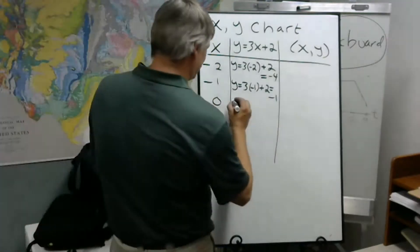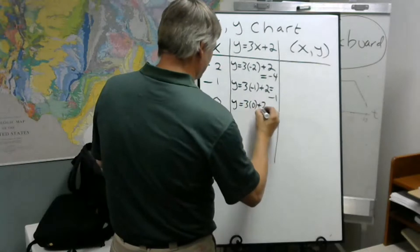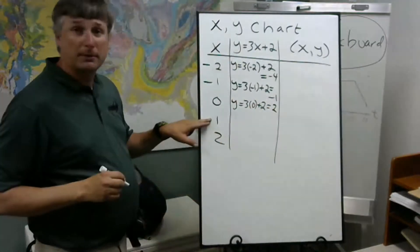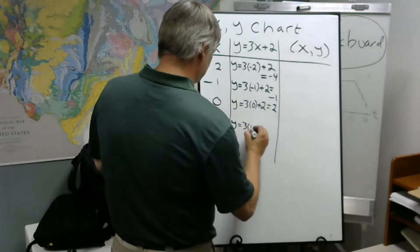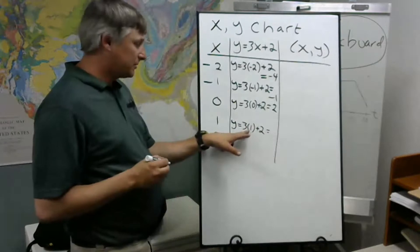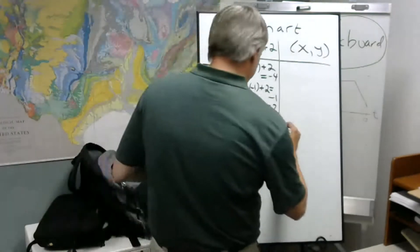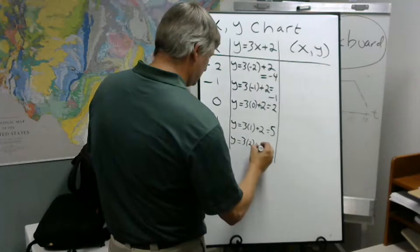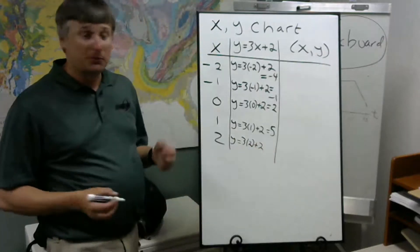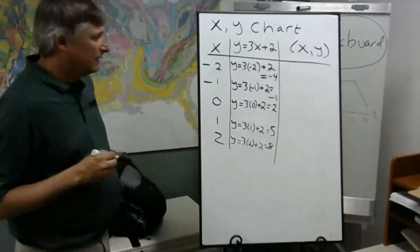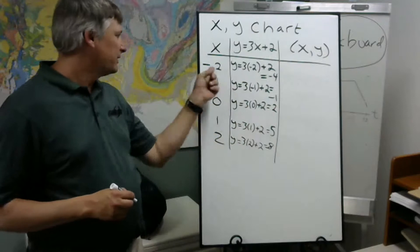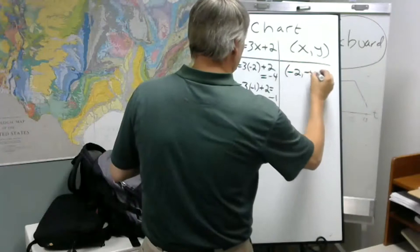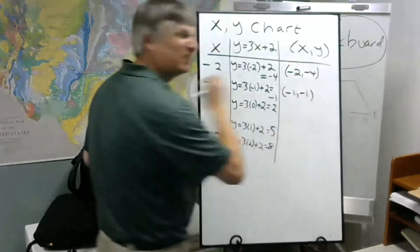Let's try zero. So 3 times 0 is 0, 0 plus 2 is 2. And then 1: 3 times 1 is 3, plus 2 is 5. And finally, x is 2: 3 times 2 is 6, 6 plus 2 is 8. So we've got our outputs for each input. So we gather these up in ordered pairs.